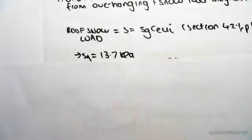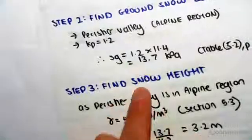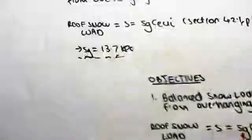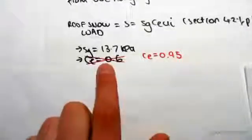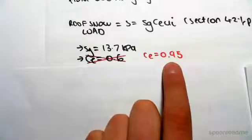the ground snow load of 13.7 kpa. We found that in one of the first videos we did, so that hasn't changed. And we also found in the previous video ce as 0.6, but that is actually not correct. C is 0.95 and we'll see why in a second.